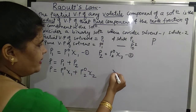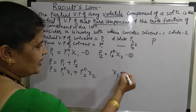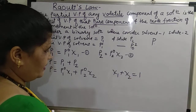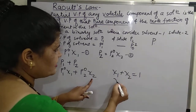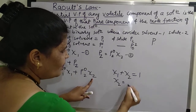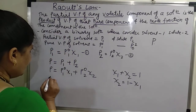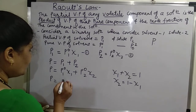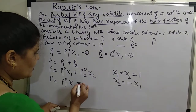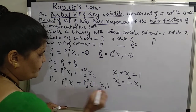For a binary solution, the mole fraction of the first component plus the mole fraction of the second component is always equal to 1. So if we want to replace X2, the mole fraction of the solute, it will be 1 minus X1. Substituting this: P equals P01·X1 plus P02·(1 minus X1).